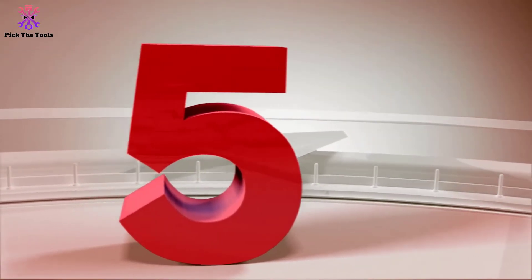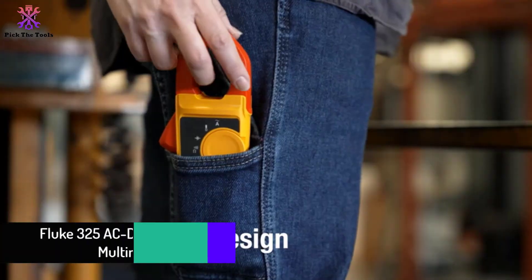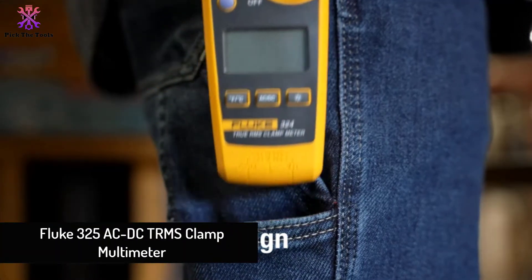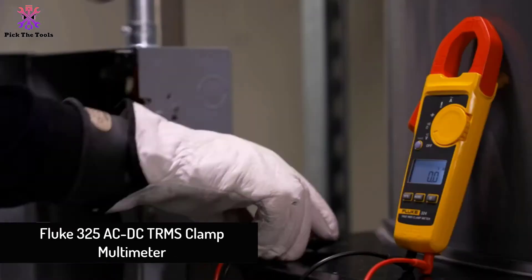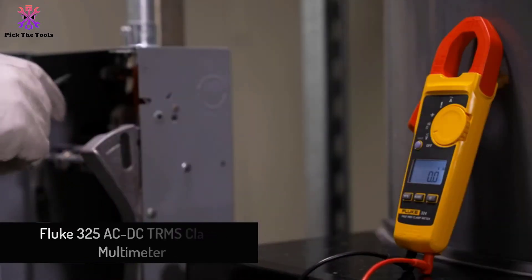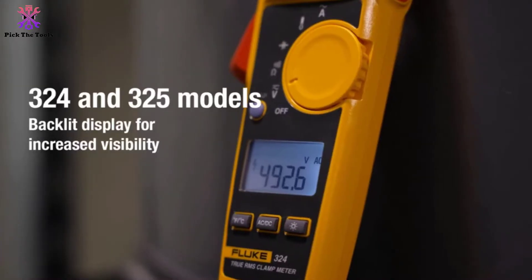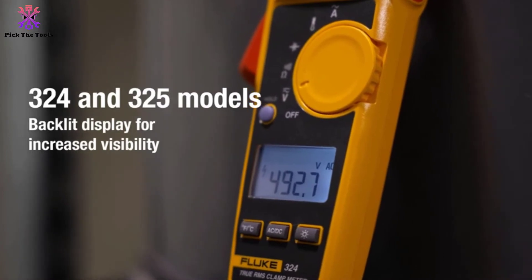Starting at number 5 we have the Fluke 325 AC DC TRMS clamp multimeter. Fluke 325 AC DC TRMS clamp multimeter is one of the best multimeters and clamp meters that rules the world of testing tools.